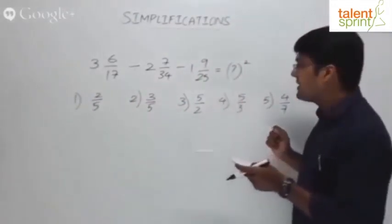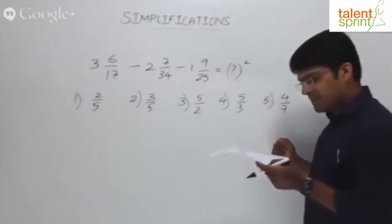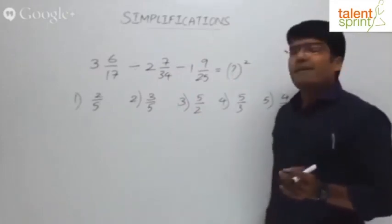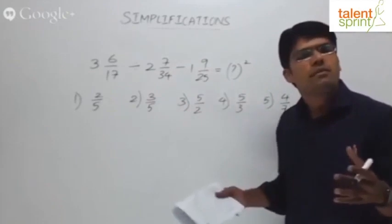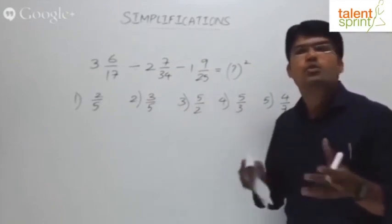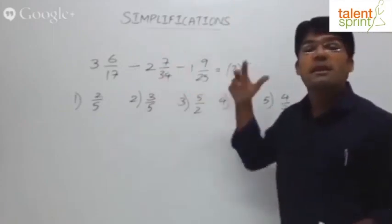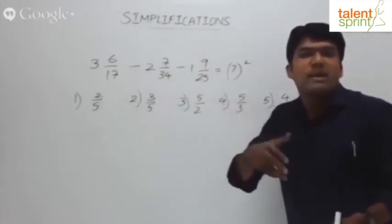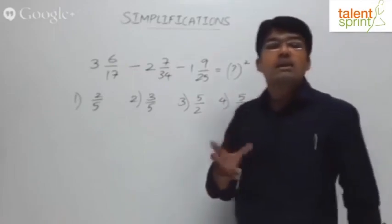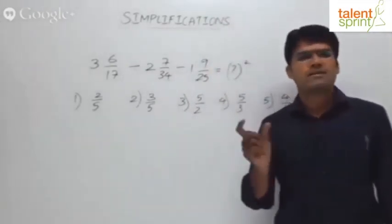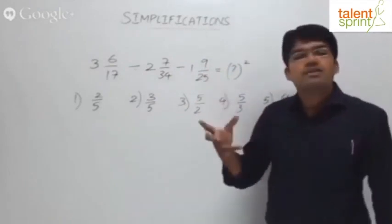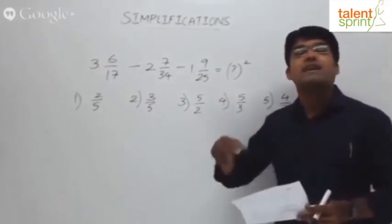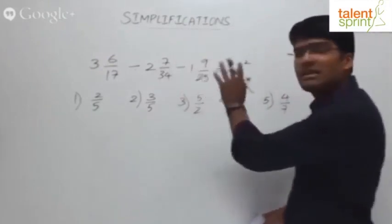So the problem is: 3 and 6/17 divided by 2 and 7/34, minus 1 and 9/25, equals question mark squared. Remember: when questions involve additions and subtractions, splitting the mixed fraction into two parts is useful. But when questions involve divisions and multiplications, it's better to convert the mixed fraction into an improper fraction.